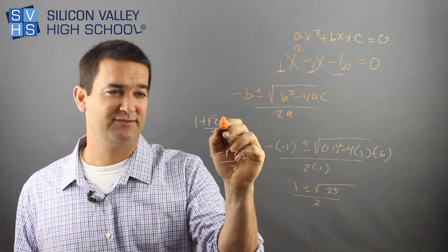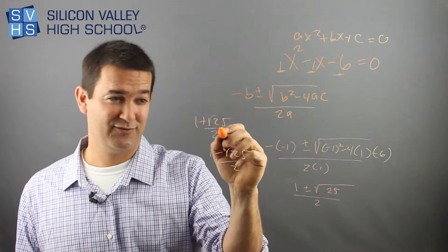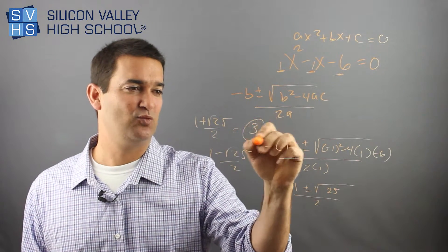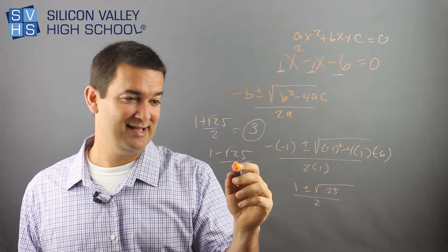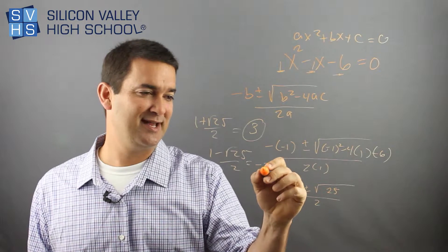The root of 25 is five. So I have one plus five, which is six, over two. This is three. That's one answer. And this one is one minus root of 25, which is five, is negative four over two, which is negative two.